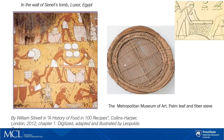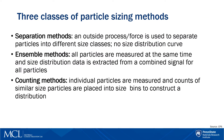The first attempts to measure particle size were recorded a long time ago. For example, in ancient Egypt people tried to control size fractions — they used sieves to separate wheat from small stones and grass. Although sieving is still a very common technique, other particle sizing techniques have been developed.